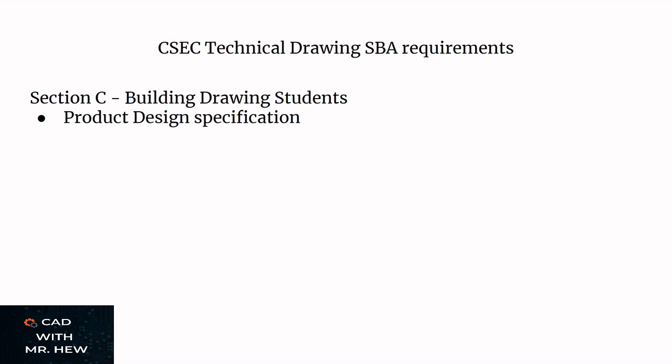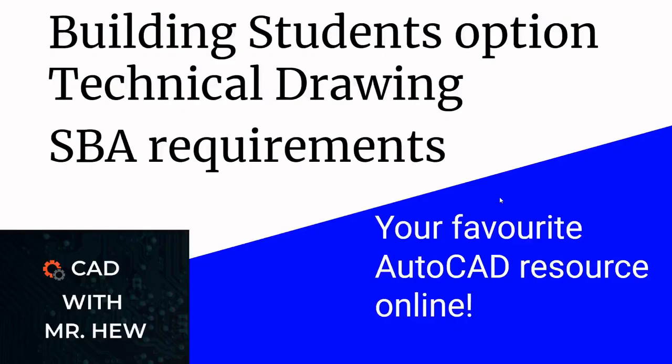In today's video we looked at the different parts of the SBA required by building students. For Section C, the student is required to complete a set of building drawing plans, a business plan, and a product design specification. Please consult your teacher for more details. This brings us to the end of today's video on the Technical Drawing Building Option SBA requirements.